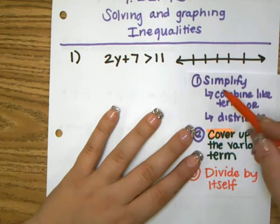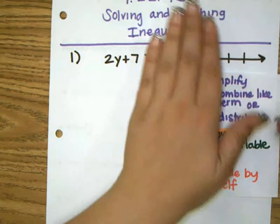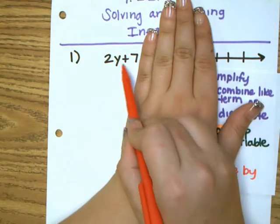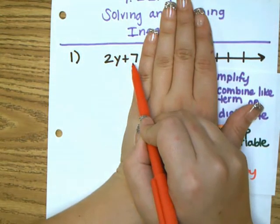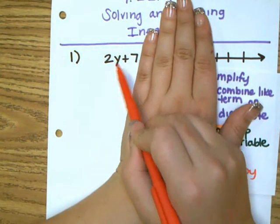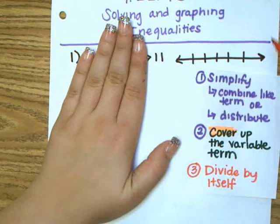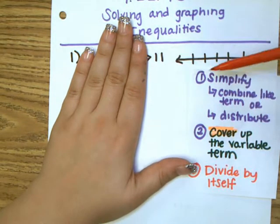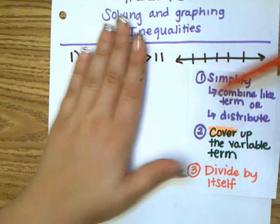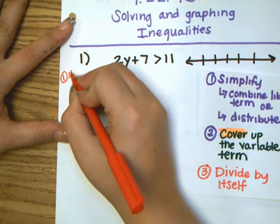The first step is to see if the inequality can be simplified. On the left side we cannot combine 2y plus 7 because they are not like terms. On the right side it is just an 11. So step 1 we skip.